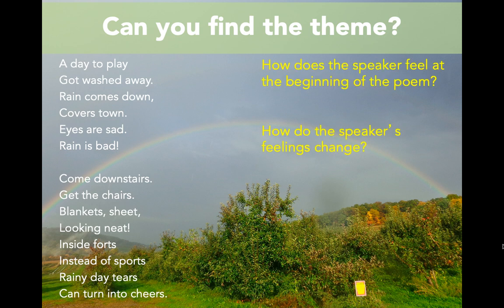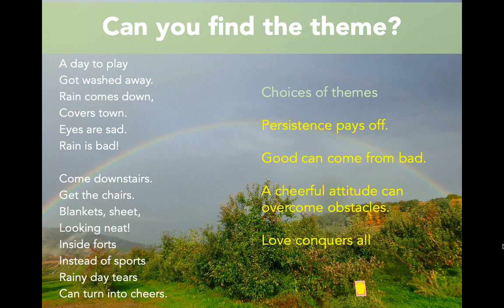Let's think about these two questions: How does the speaker feel at the beginning of the poem, and how do the speaker's feelings change? At the very beginning, the speaker does not feel very good about the rain — they have a negative attitude. But towards the end, in that second stanza, the speaker is feeling very positive. Now take a look at these four themes: persistence pays off; good can come from bad; a cheerful attitude can overcome obstacles; or love conquers all. Which one do you think best matches this poem?